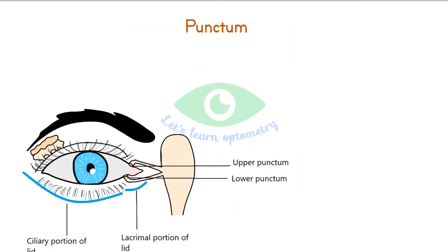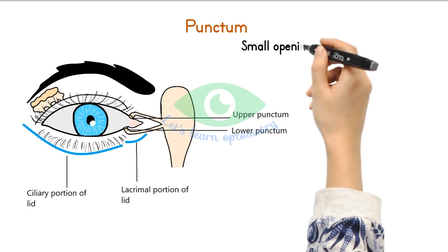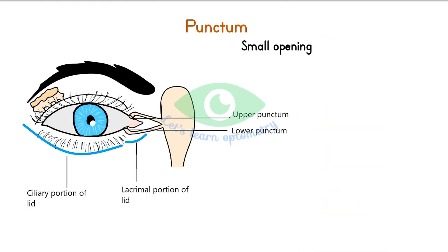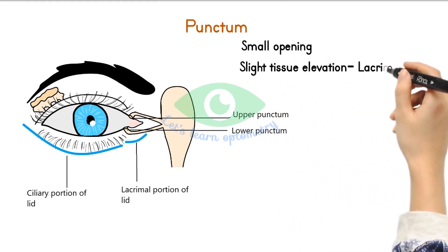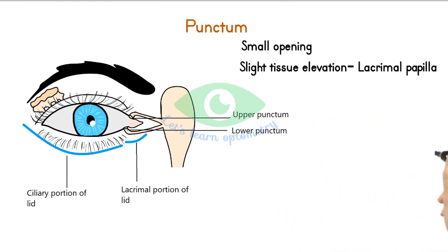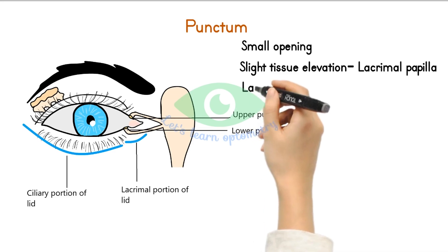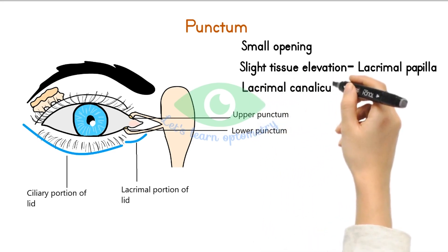The punctum is a small opening in the eyelid located in a slight tissue elevation called the lacrimal papilla, at the junction of the lacrimal and the ciliary portions of the eyelid margin. Both the upper and lower lids have a punctum. Each punctum opens into a tube called the lacrimal canaliculus.